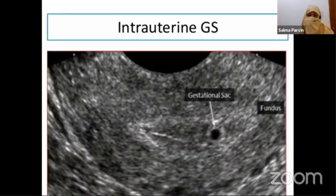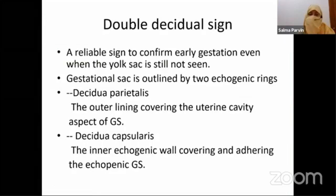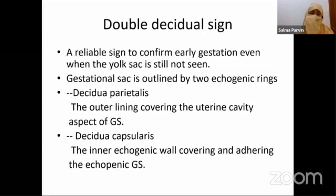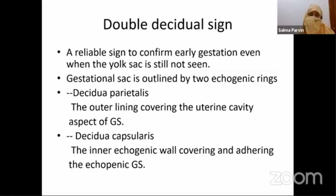This is a small gestational sac — just a drop of fluid inside the uterine cavity with trophoblastic tissue around it. The double decidual sign is very important. This is a reliable sign to confirm early gestation even when the yolk sac is still not seen, and even without a fetal pole. The gestational sac is outlined by an echogenic ring of decidua parietalis and decidua capsularis.